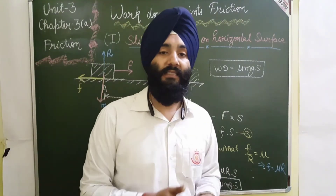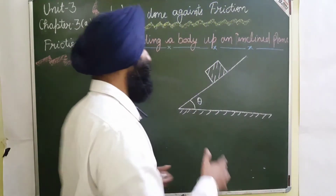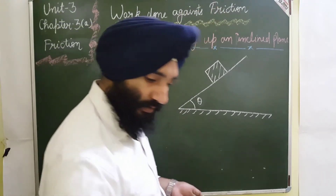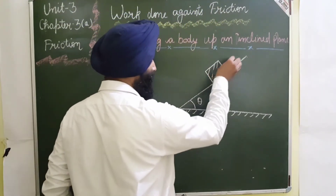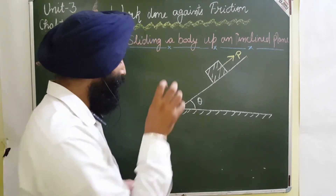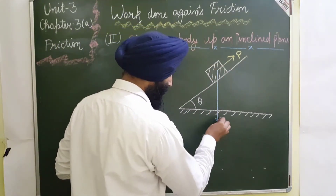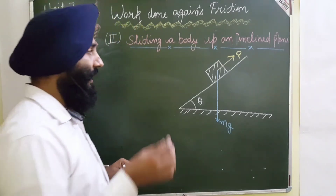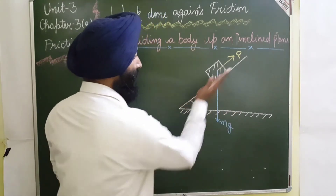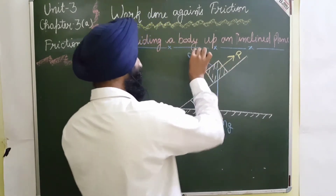In the second case, we discuss work done against friction when sliding a body up an inclined plane. Suppose the applied force on the body is P. The body has mass M, so the downward vertical force is Mg — the weight is Mg. The normal reaction is always perpendicular to the surface, so this is the direction of reaction R.